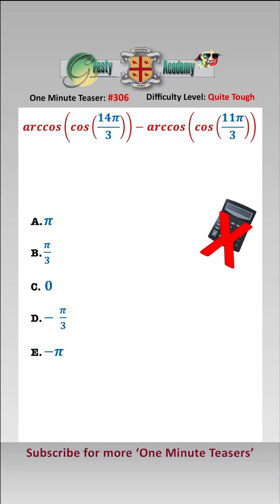We can only use the fact that arccos of cos of theta equals theta when theta is greater than or equal to 0 and less than or equal to pi. So we need to change these two numbers so they're in that range.